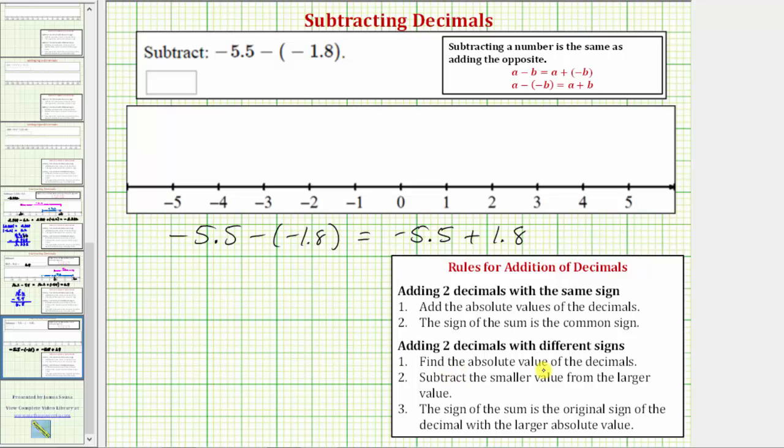So step one is to find the absolute value of both decimals. So we need to find the absolute value of negative 5.5 and the absolute value of positive 1.8. The absolute value of a number is the number's distance from zero, and because distance is always positive, the absolute value is always positive.